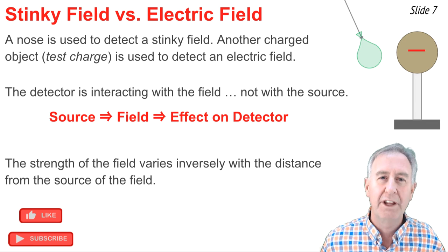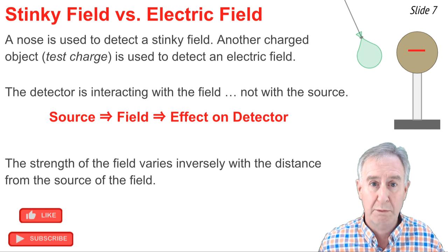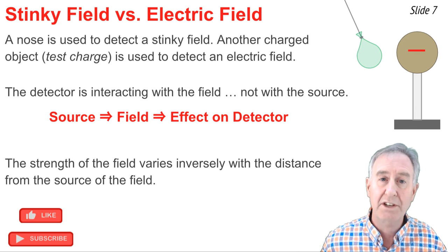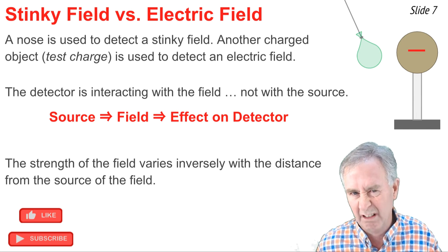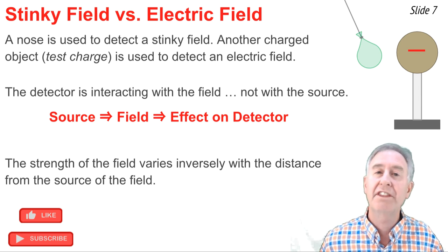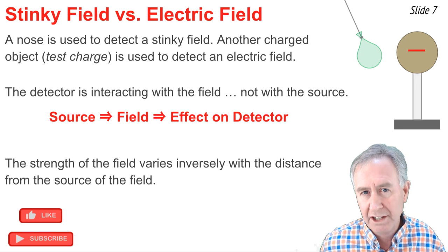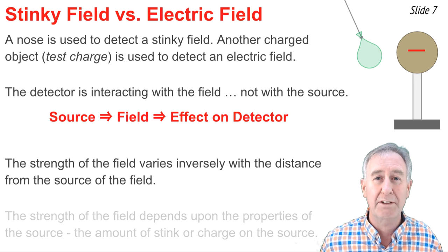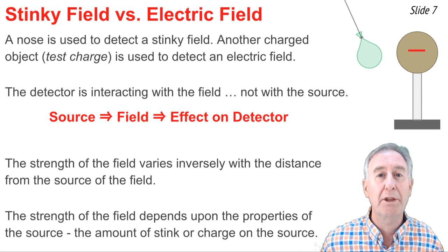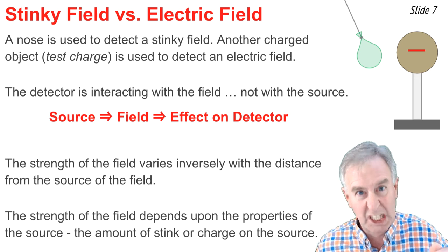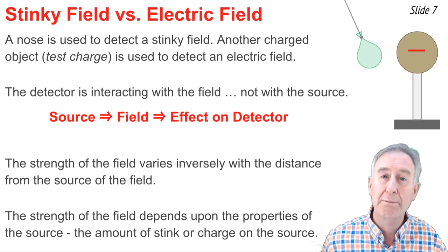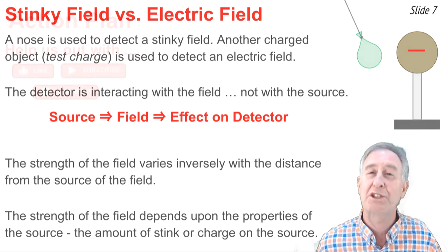The strength of the electric field varies inversely with the distance from the detector to the source. In the case of the stinky field, the closer you get to the diaper, the stronger the field. In the case of an electric field, the closer the test charge gets to the source charge, the stronger the electric field. Finally, the electric field depends upon the properties of the source — in the stinky field analogy, how much stink is in that diaper; in the electric field, how much charge is on that negatively charged sphere.